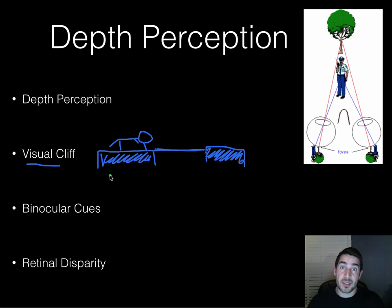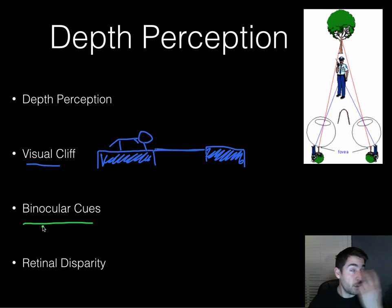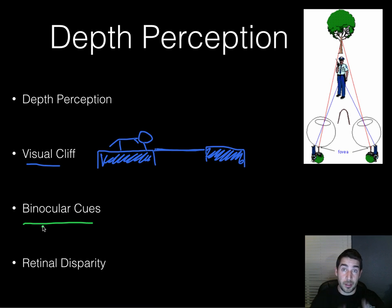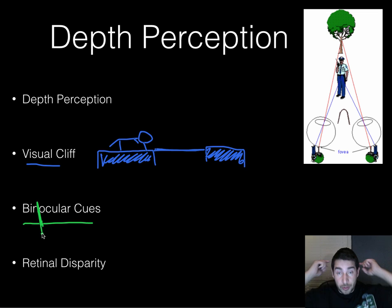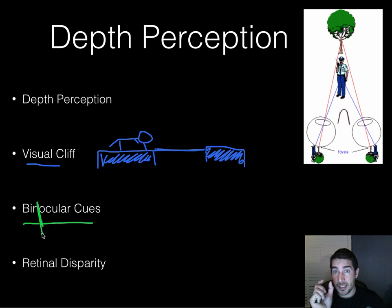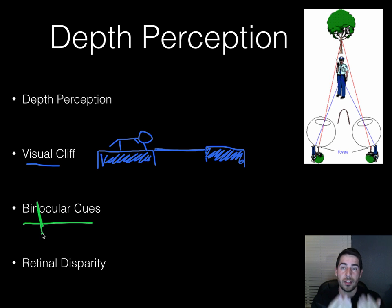We now know that depth perception grows and gets better with time. One of the ways we use depth perception is with binocular cues — we have two eyes that see things at slightly different angles because they're about two and a half inches apart. The bigger the difference between what each eye sees, the closer the brain judges the object to be. If you close one eye then the other while staring at something nearby, you'll see a big shift — something far away produces much less of a shift.